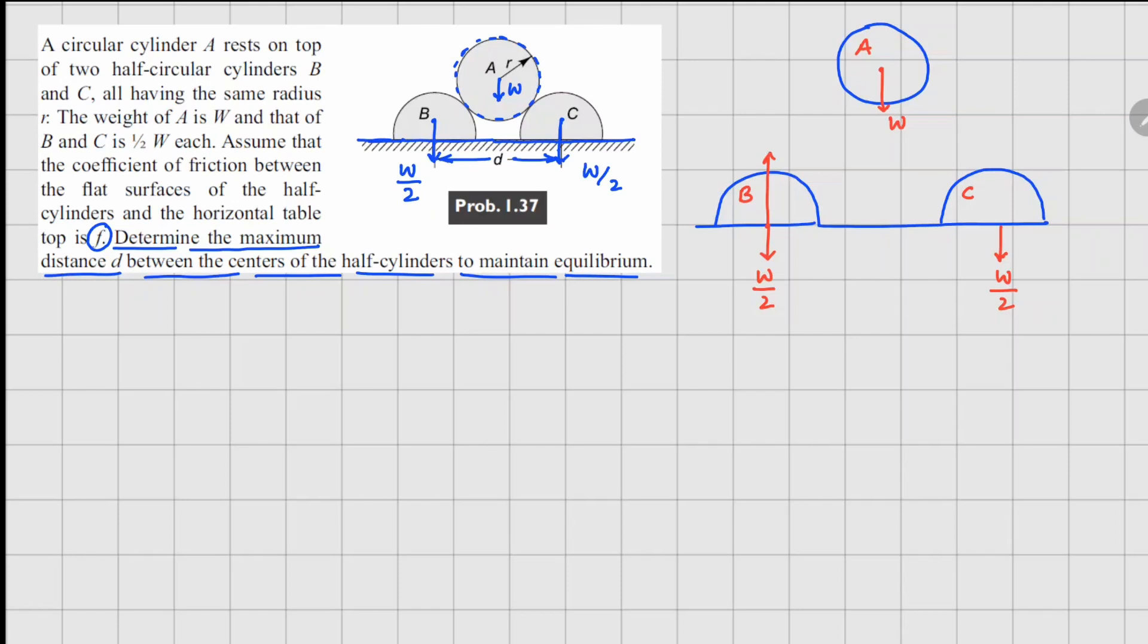Your normal reactions. So I will call this one as NB and this one as NC. And in terms of friction, this cylinder will go to the left hand side and this one will go to the right hand side. That's the tendency of motion. So since friction opposes this motion, here it's going to be F times NB and on this side, it's going to be this way, which is again F times NC.